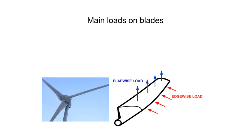The main loads on the blades are generated by wind and by gravity. Wind loads mainly induce both flapwise and edgewise bending. These loads have both a static and a dynamic component — variation in wind speed and natural wind shear — that induce fatigue on the blade material. Gravity loads mainly induce edgewise bending. When the blade is horizontal, the rotation of the blades causes alternating edgewise bending and thus fatigue of the material.